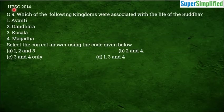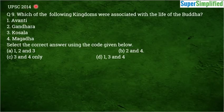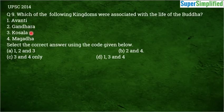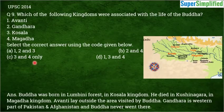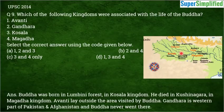Question number 9, from UPSC 2014 — a question that has appeared twice in UPSC Preliminary examination: Which of the following kingdoms were associated with the life of Buddha? Avanti, Gandhar, Koshal, or Magadh? The correct answer is C — 3 and 4 only, that is Koshal and Magadh. Avanti and Gandhar were not associated with Buddha. Buddha was born in Lumbini forest, present-day Nepal, which was under the Koshal Kingdom. He died in Kushinagar, which was in the Magadh Kingdom.